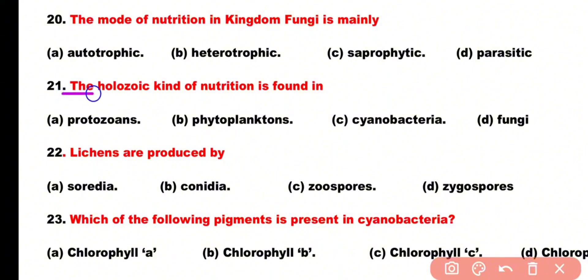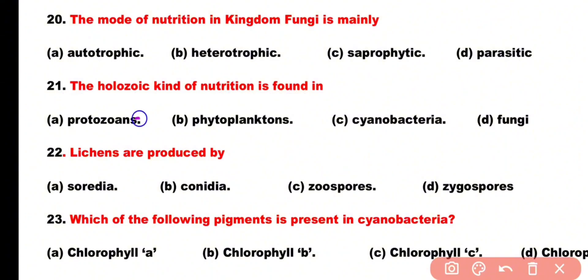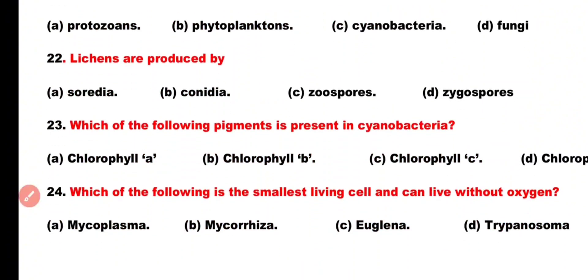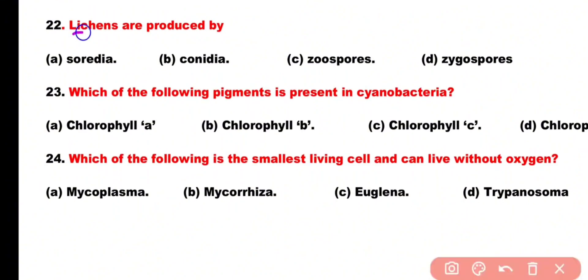Question number 21: Holozoic kind of nutrition is found in: protozoans, phytoplanktons, cyanobacteria, or fungi. Correct answer is option A. Protozoans have holozoic kind of nutrition. Question number 22: Lichens are produced by: soredia, conidia, zoospores, or zygospores. Correct answer is option A. Soredia are the reproductive structures used to produce lichens.